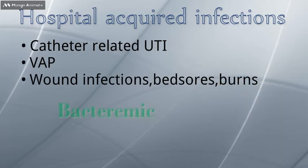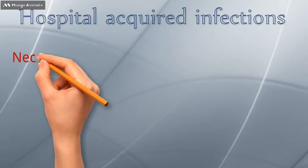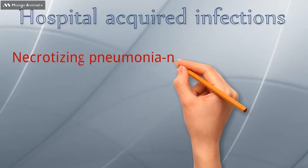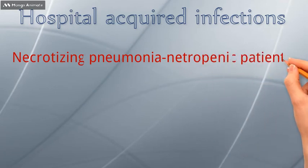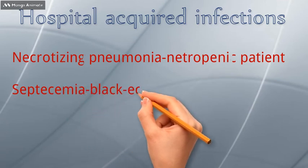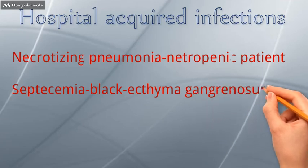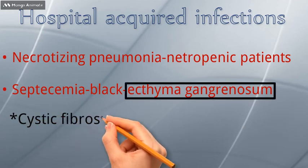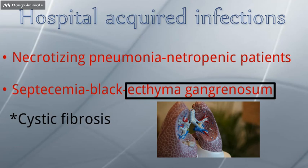Pseudomonas infections often become bacteraemic. It can lead to necrotizing pneumonia, which is associated with a high mortality rate in neutropenic patients. Septicaemic infections of Pseudomonas aeruginosa are characterized by black necrotic skin lesions known as ecthyma gangrenosum. The lungs of individuals with cystic fibrosis are particularly susceptible to life-threatening infections caused by Pseudomonas aeruginosa.